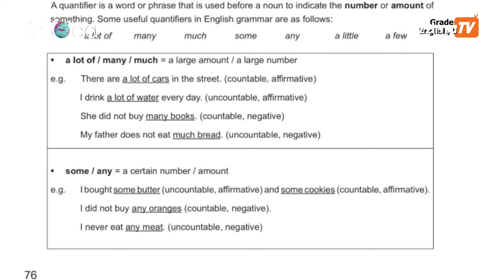Some is used in affirmative sentences with countable and uncountable nouns. Any is used with uncountable nouns in negative sentences. We can use some or any depending on the sentence type.